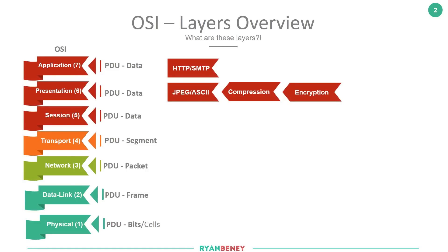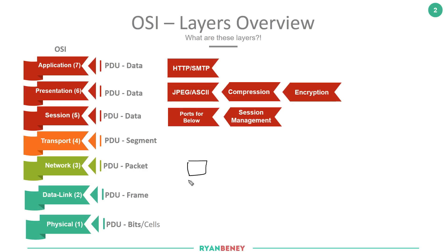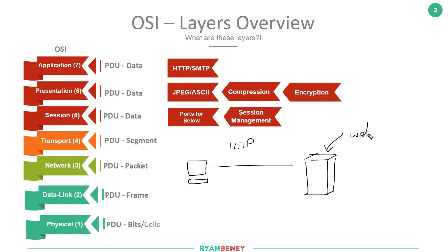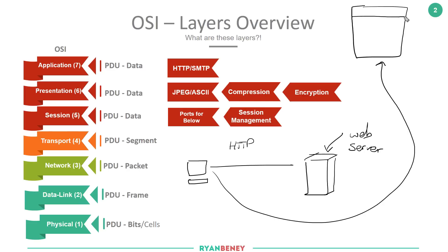Moving further down the stack, we come to the session layer, which is layer 5. Quite a few things happen at the session layer — it helps establish sessions with reserved ports, helps track connections between remote hosts, and allows us to negotiate duplex with the remote host. For example, let's say we have our PC communicating with a remote web server using HTTP, and our browser has tab 1 and tab 2 open. The session layer at layer 5 helps us with a few things in this scenario.